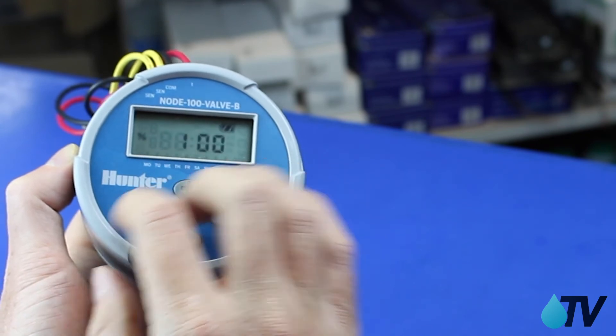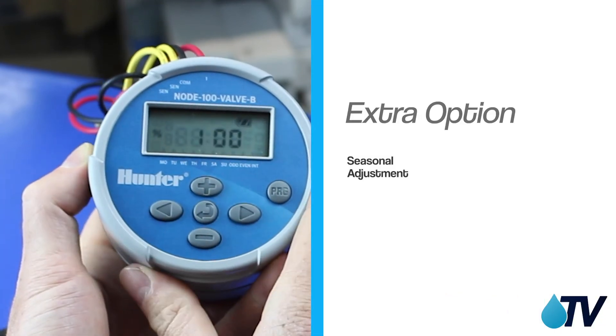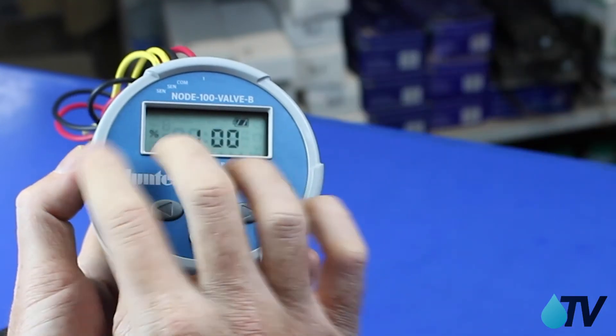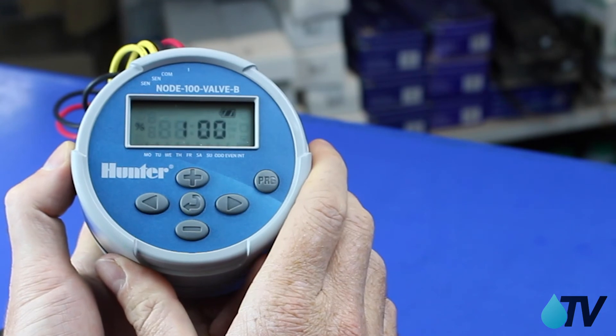We can cycle through to the next option, which is our seasonal adjustment. That would be if we came to cooler times in the year, we could drop the percentage down and that will adjust our run times by percentage.